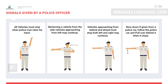Signals given by a police officer: Picture one — all vehicles must stop when a policeman raises his hand. Picture two — beckoning a vehicle from the side; a vehicle approaching from the left may continue. Picture three — vehicles approaching from behind must stop; both left and right may continue. Picture four — slow down if given from a police car, follow the police car and pull over behind it when it stops.